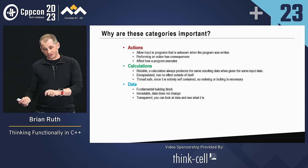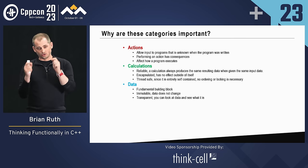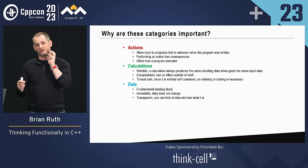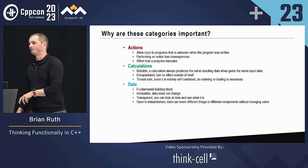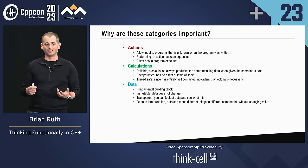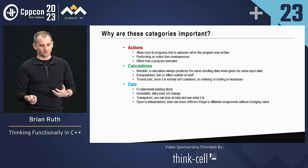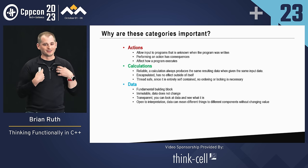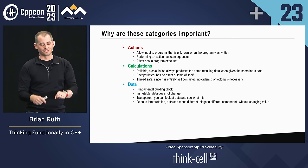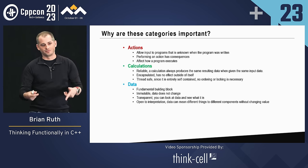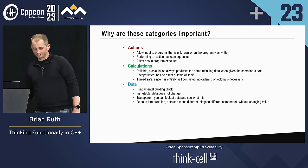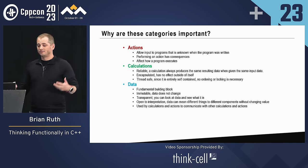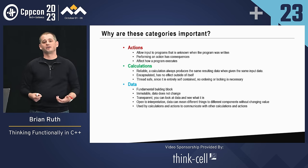Data is transparent — when you look at that name structure, you can see it's got a first name and a last name. But it's also open to interpretation. A first name and last name 'Brian Ruth' means to me that I need to be here to give the talk, but to you it means that's the guy who's going to be on stage talking to me. This data is going to have different meanings to different people. It's underpinning everything — used by calculations and actions to communicate with other calculations and actions.